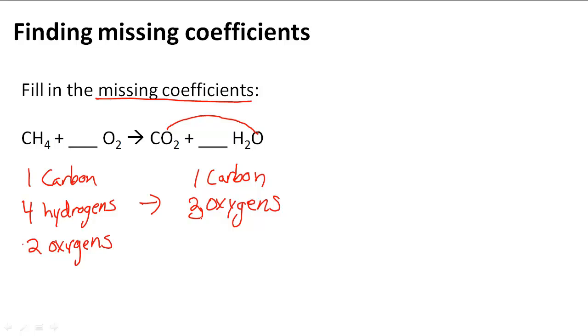We have two hydrogens on the product side. Now we can see that the hydrogens don't match up—there's four here and only two here. The oxygens don't match up either—two here and there's actually three on this side.